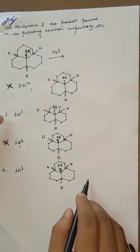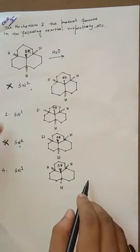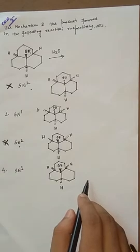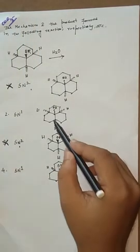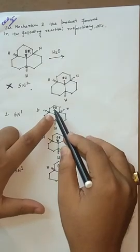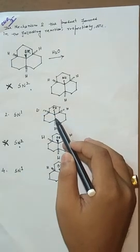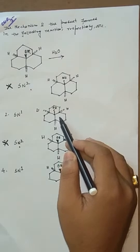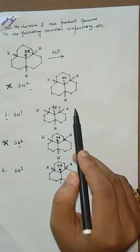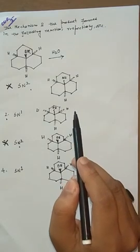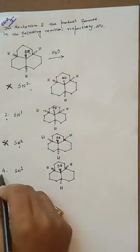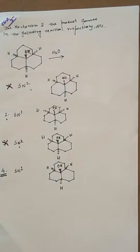The possible answers are SN1 mechanism — that is, options 2 and 4 are correct. In SN1, the nucleophile attacks above or below the plane, so either is possible. But if we think answer 2 is right — that nucleophilic attack occurs both above and below the plane — our assumption is totally wrong, because the answer is 4. How is the product 4?